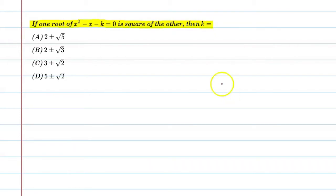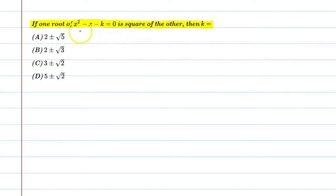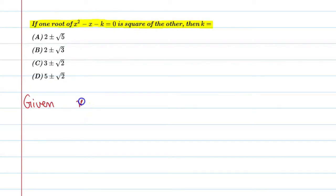So students, basically this question में हमें ये कहा गया है कि अगर आप इसका एक root लें, there is a relation between two roots — कि जो इसका एक root है वो दूसरे root के square के equal है. And this is a quadratic equation. तो बताएंगे k की value क्या होगी. So let's start. First of all, we'll write the given equation: x squared minus x minus k equal to 0.